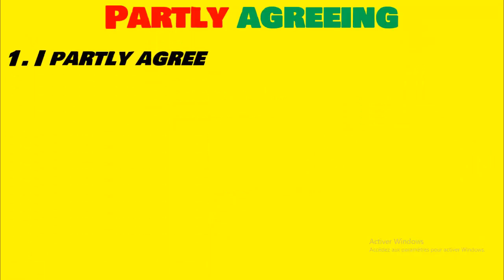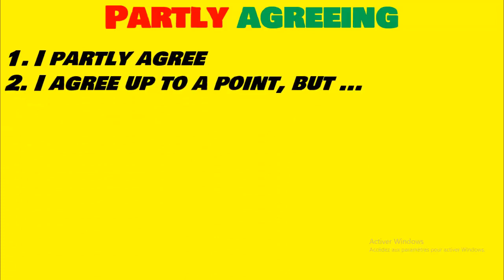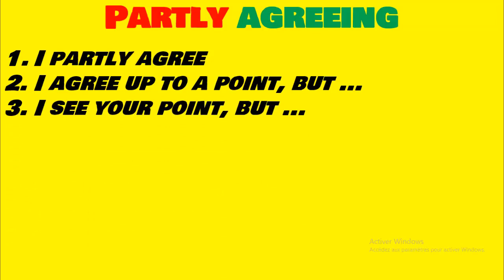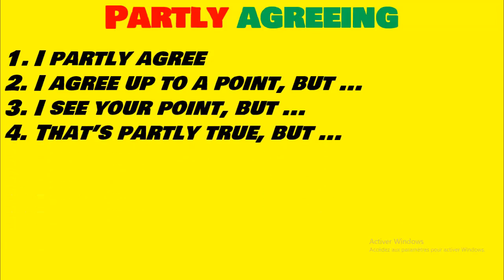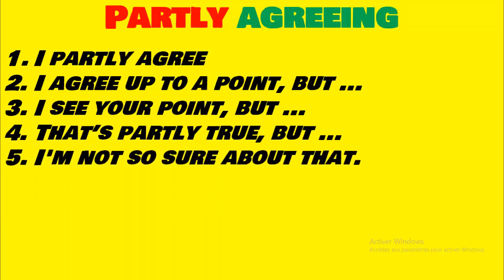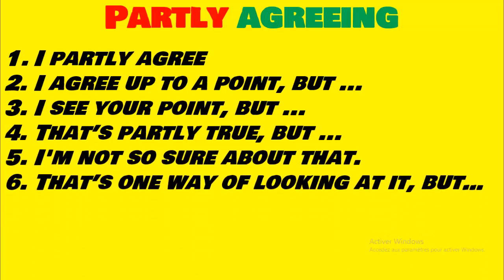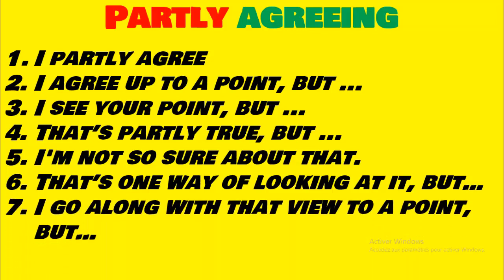Sometimes you partly agree with something or someone. You can say: 'I partly agree,' 'I agree up to a point, but…,' 'I see your point, but…,' 'That's partly true, but…,' 'I am not so sure about that,' 'That's one way of looking at it, but…,' 'I go along with that view to a point, but…' The word 'but' means 'mais' — so when someone says 'I agree, but…' it means they are not 100% in agreement.